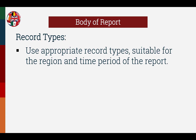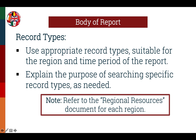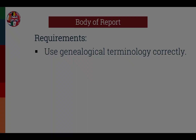Another requirement is that appropriate record types and sources suitable for the region and the time period of the report are used. This shows expertise with the records from that accreditation region. Also explain the purpose of searching specific record types when helpful to the client. For the Level 1 project, there's no need to explain the purpose of every search — use your best judgment for balance. Refer to the regional resources document for your accreditation region at icapgen.org, which covers important record types, resources, and key strategies for your region.